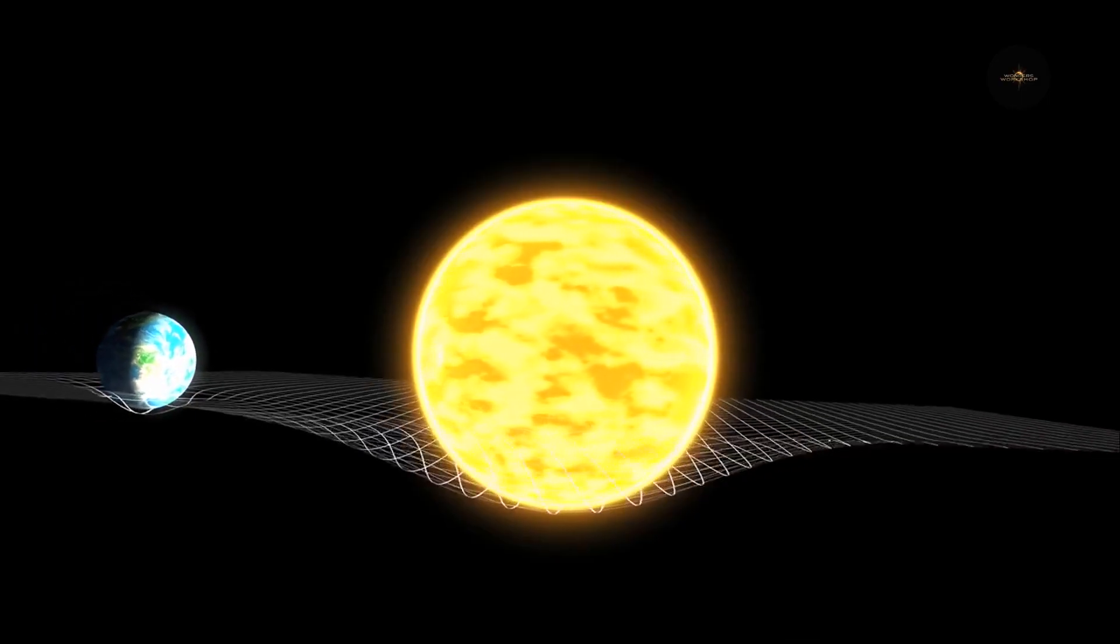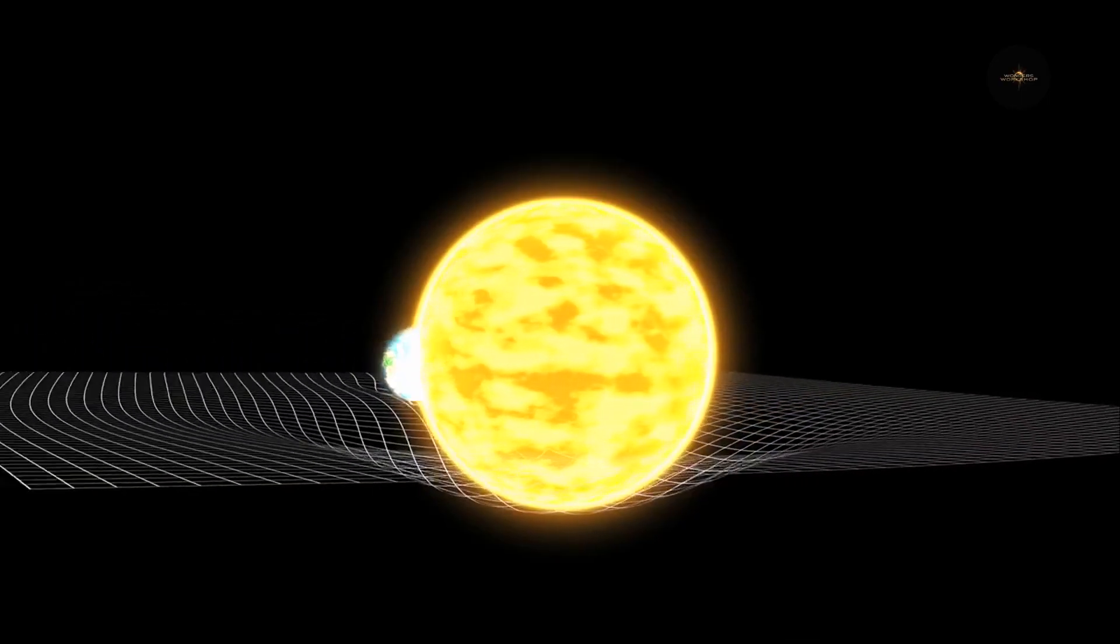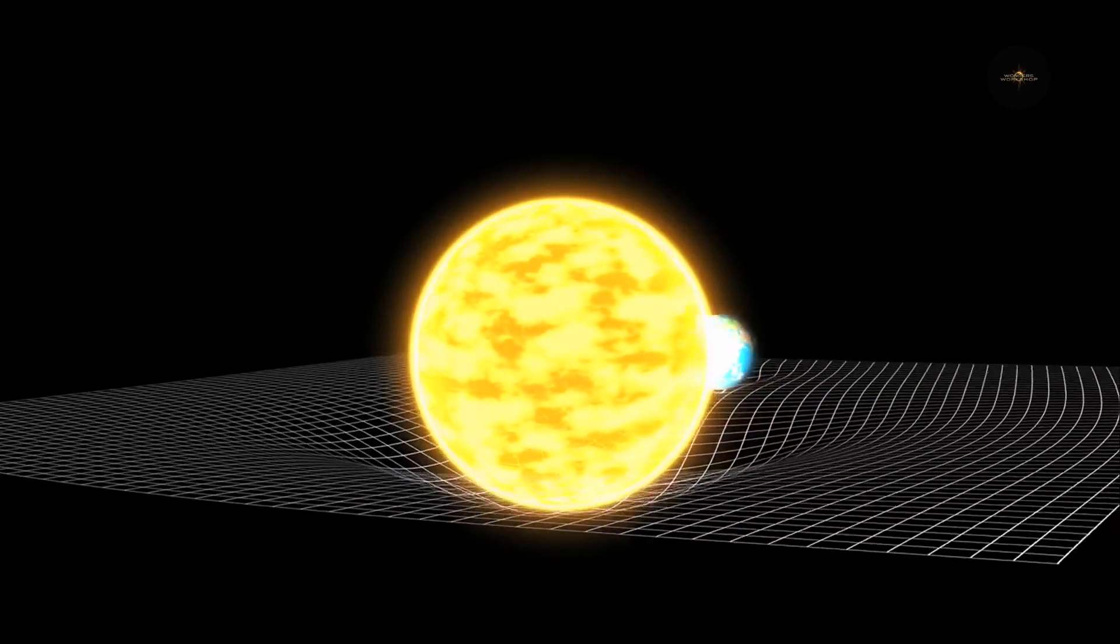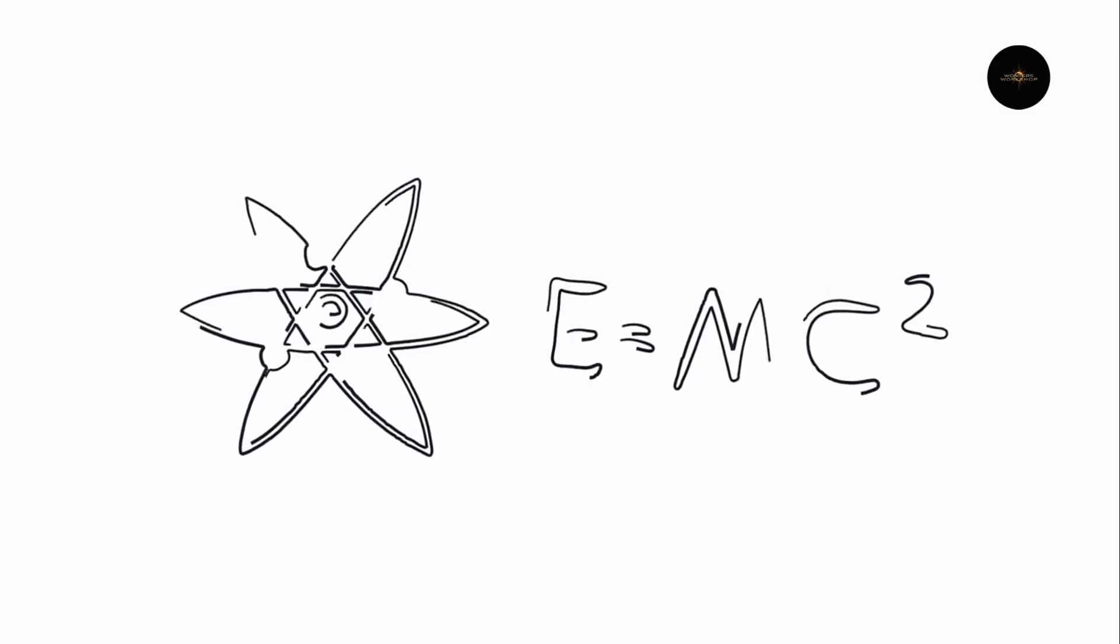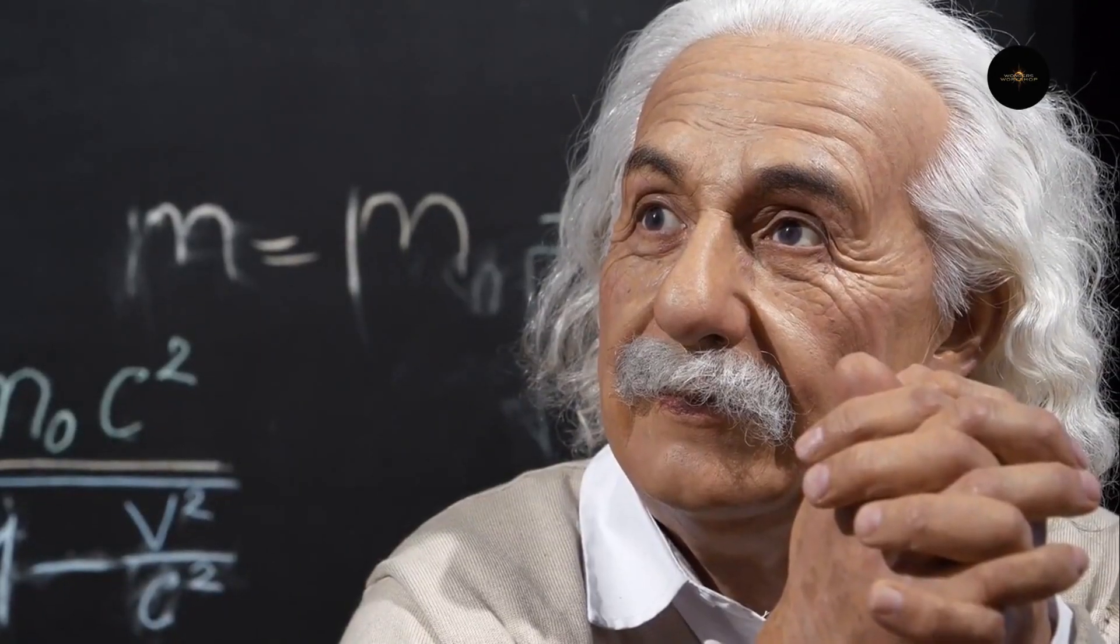According to Albert Einstein's theory of relativity, time is relative. It depends on motion and gravity. The closer we are to a massive gravitational object, the slower time passes. But what if time were just a construct of our minds?